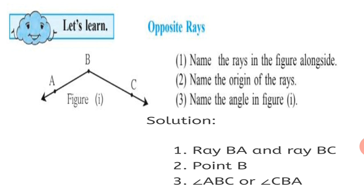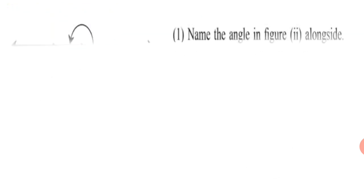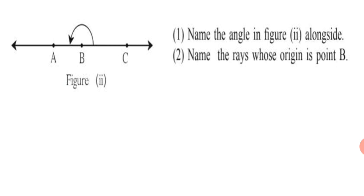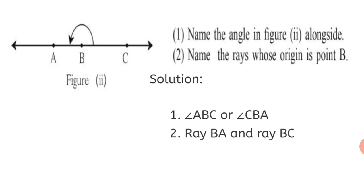Let's have a look at one more figure. Figure 2: name the angle in figure 2 alongside. You can see an arrow marked which denotes the angle. We can name the angle as angle ABC or angle CBA. Ray BA and ray BC are the two rays with the origin point B.